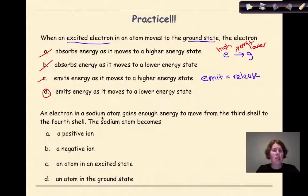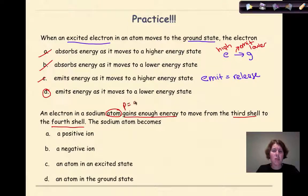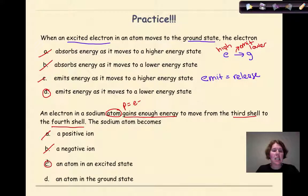Let's look at the second question. An electron in a sodium atom gains enough energy to move from the third shell to the fourth shell. The sodium atom becomes: A, a positive ion; B, a negative ion; C, an atom in the excited state; D, an atom in the ground state. First, we're not losing any electrons here — we're just moving an electron from a lower energy state to a higher energy state, so we're dealing with atoms where protons equal electrons, therefore we're not making any ions. So A and B are out. We're going from the third shell to the fourth shell, which means we're moving away from the nucleus. The correct answer is C — the sodium atom becomes an atom in the excited state, because the electron that's moving is becoming more excited as it gains more energy.